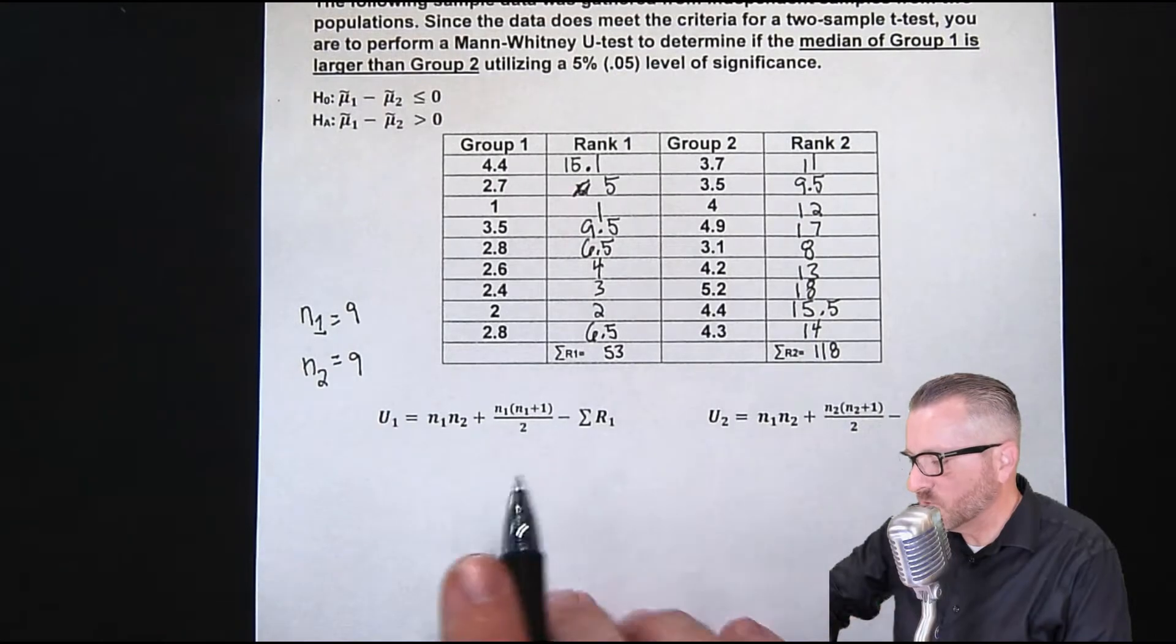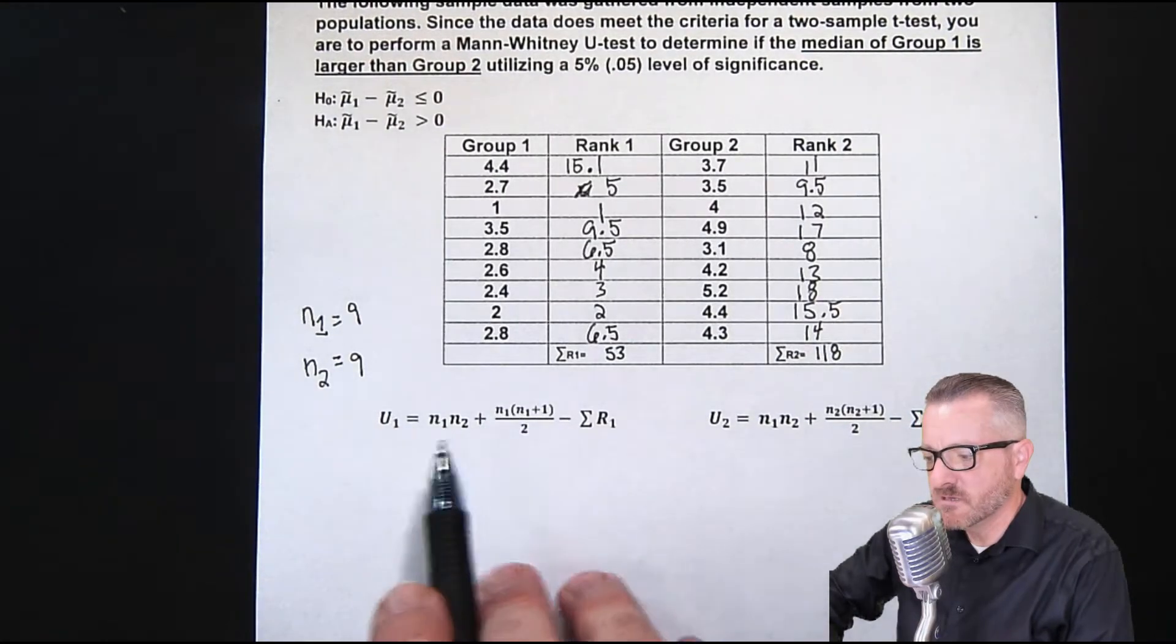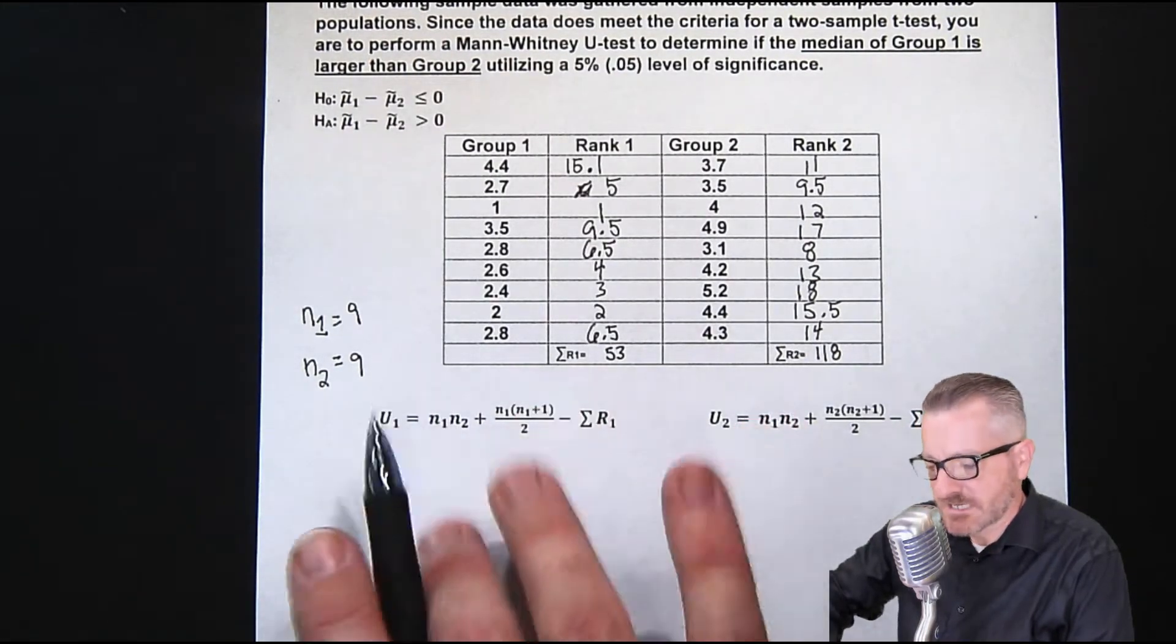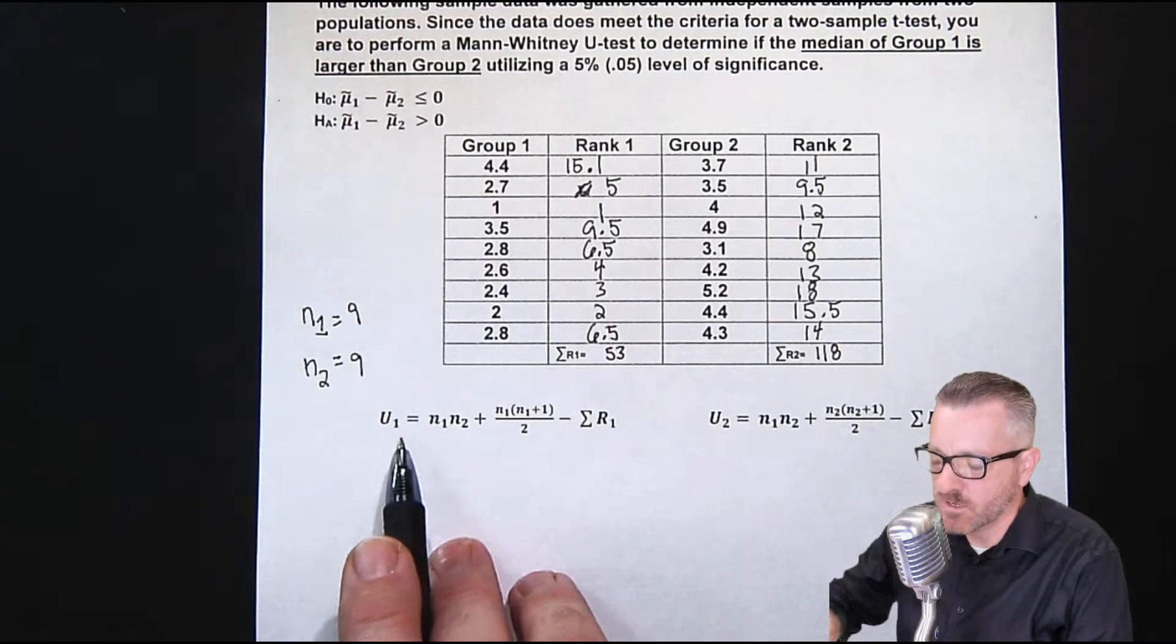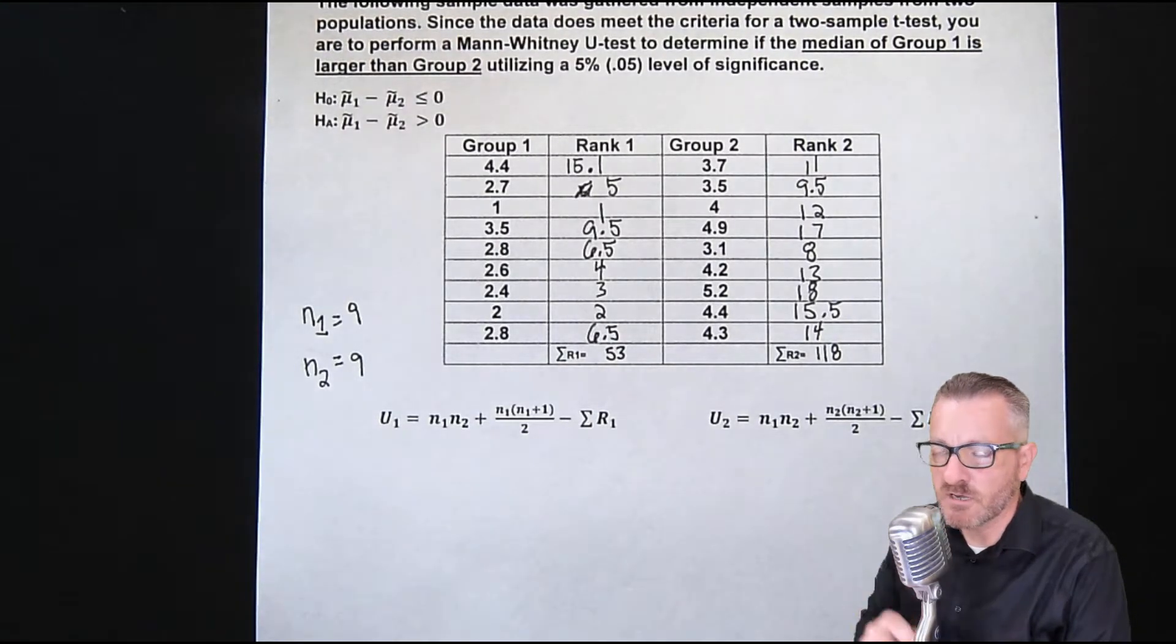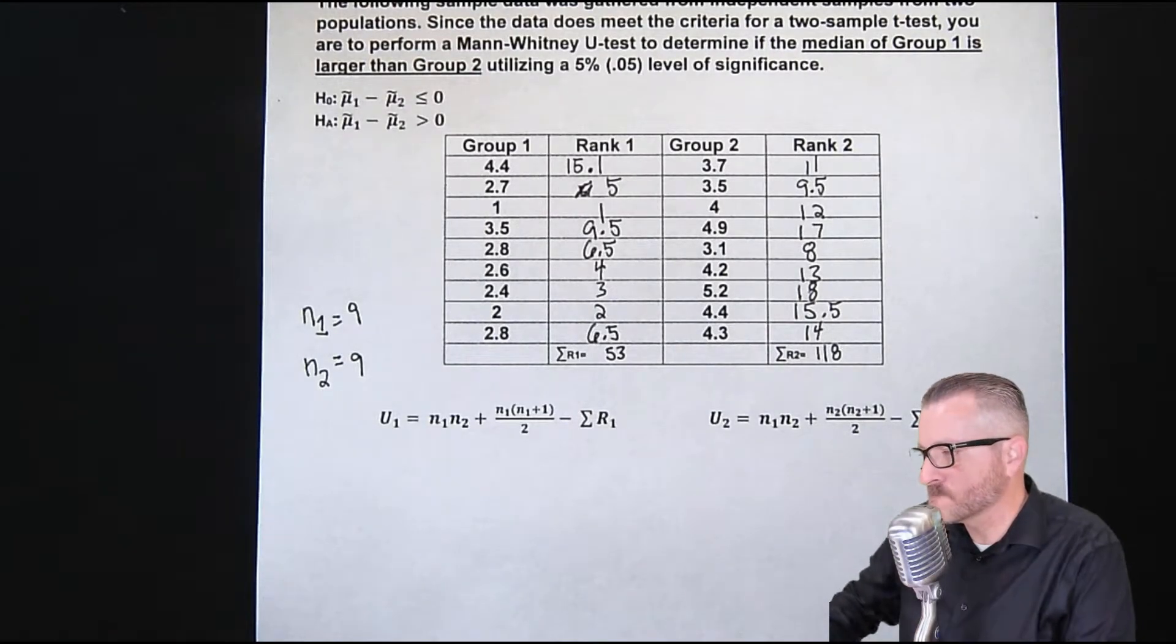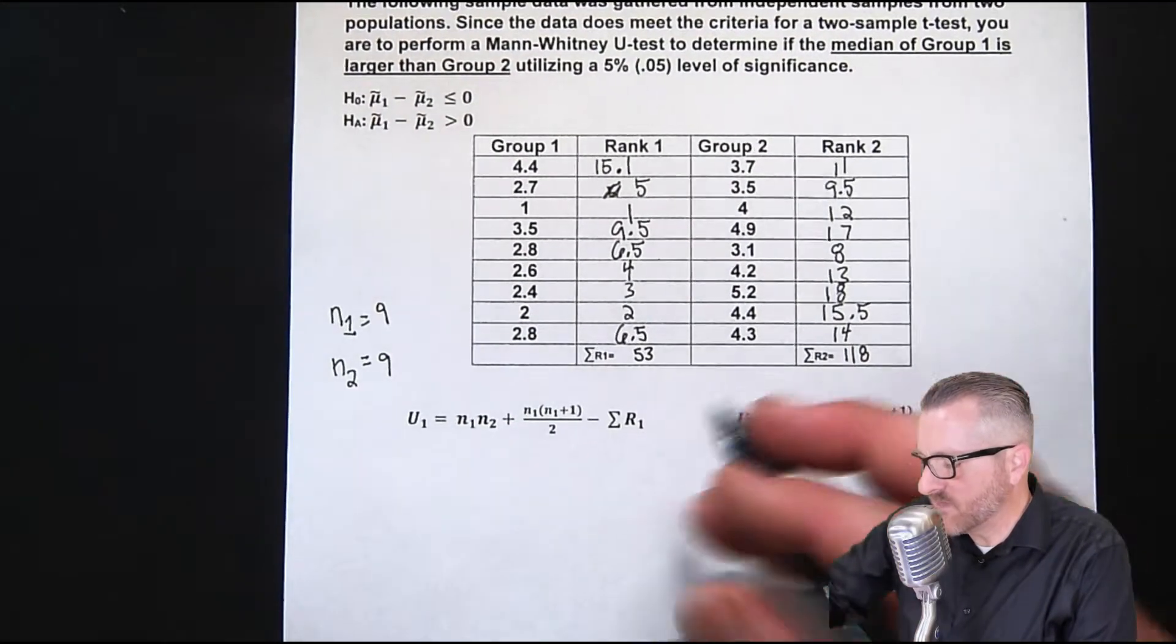So as I mentioned, we're looking for, we're going to be more closely scrutinizing U one. So we're going to use that. And that's what we're going to compare with our critical statistic.